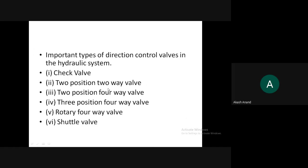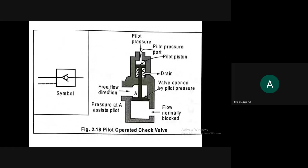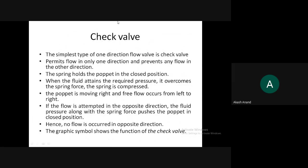Important types of directional control valves in hydraulic systems are: check valve, two-position two-way valve, two-position four-way valve, three-position four-way valve, rotary four-way valve, and shuttle valve. The check valve is the simplest type — it permits flow in only one direction and prevents any flow in the other direction.